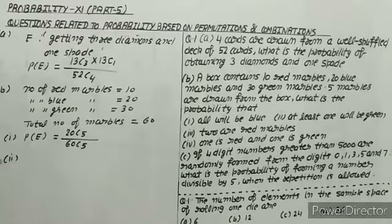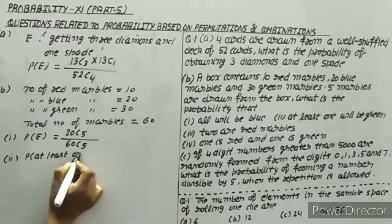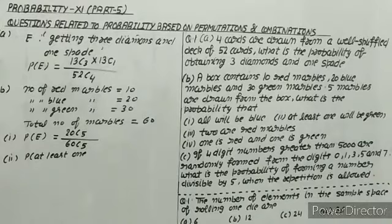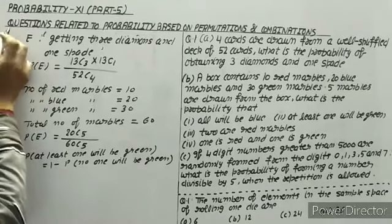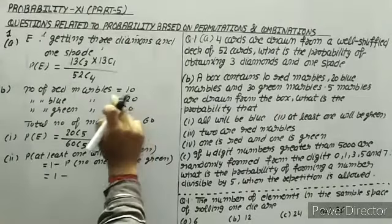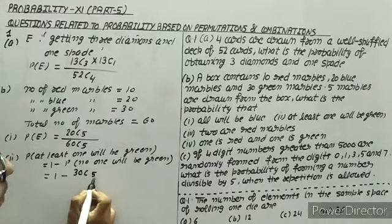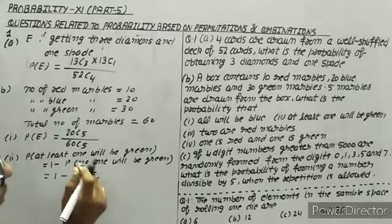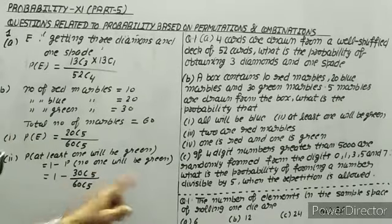Now the second case: let F be the event of getting at least one green marble. The probability of at least one green = 1 − P(no green). Marbles that are not green total 30, so P(no green) = 30C5 / 60C5. Therefore, P(at least one green) = 1 − 30C5 / 60C5. This is the answer for this part.